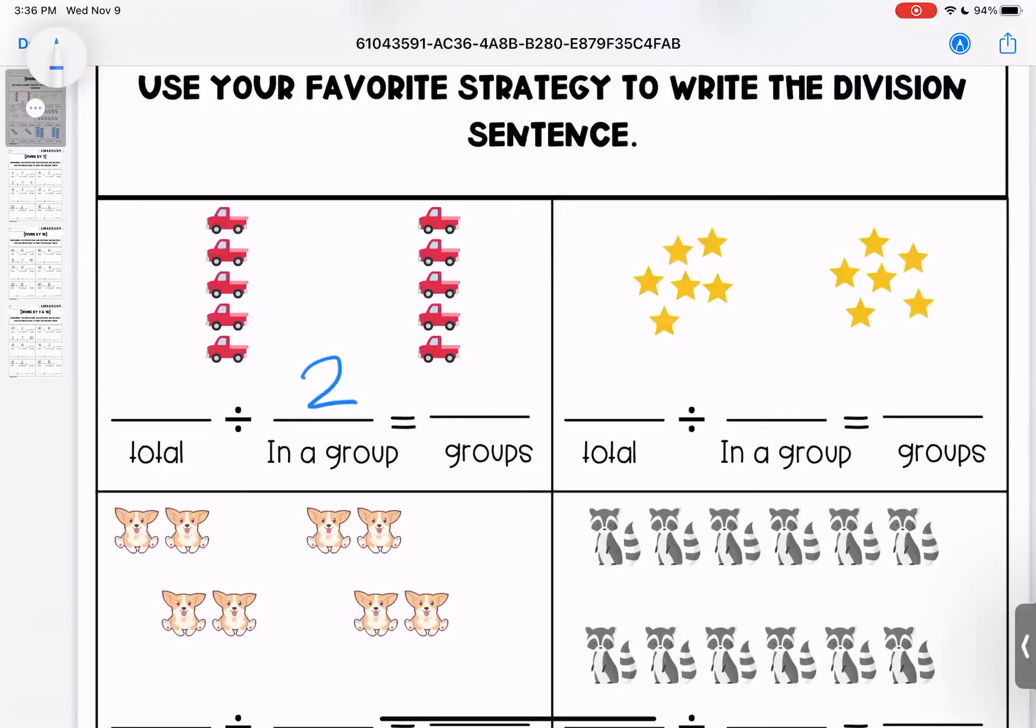So I see that I have two groups and how many are in each group? One, two, three, four, five. And if I have five here and five here, that means ten total. So ten divided by two equals five.